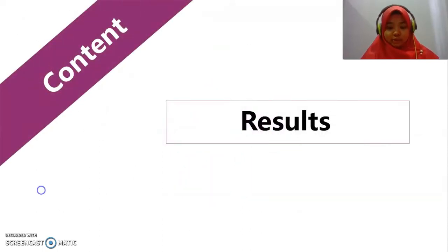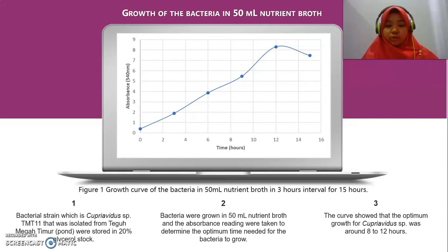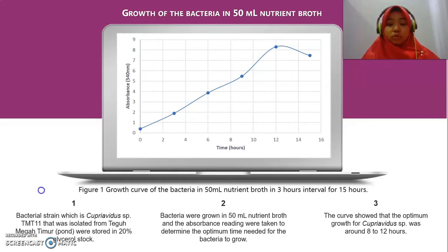These are my results. This is the growth of the bacteria in 50mN growth medium. The bacteria strain, which is Cupriavidus species TMT11, was isolated from Teguh Megah Timur pond and stored in 20% glycerol stock. The bacteria were grown in 50mN growth medium and absorbance readings were taken to determine the optimum time needed for the bacteria to grow. The growth curve showed that the optimum growth for Cupriavidus species was around 8 to 12 hours.